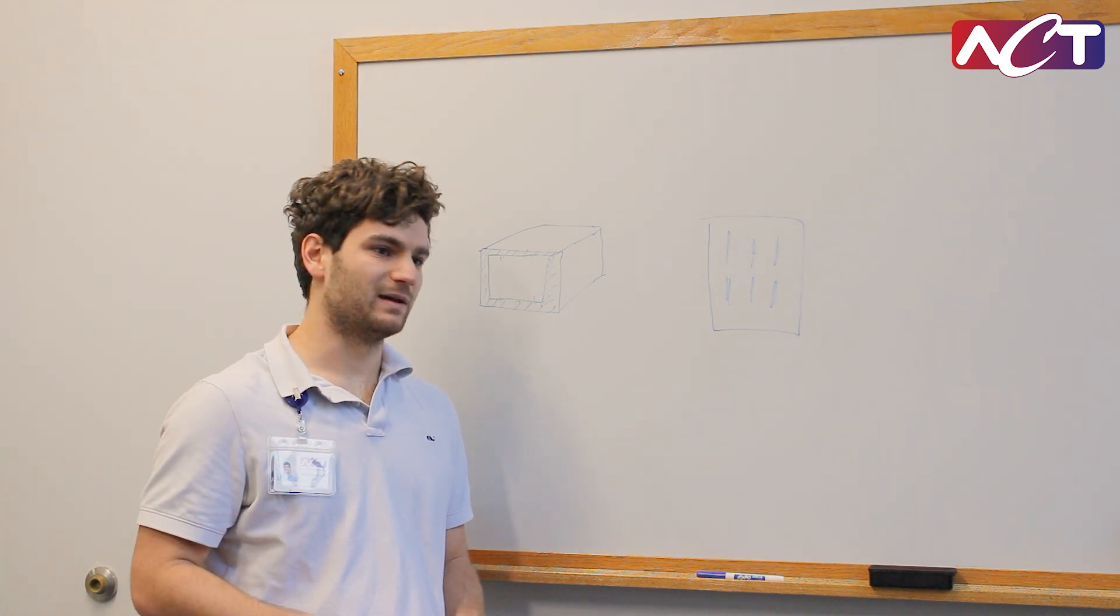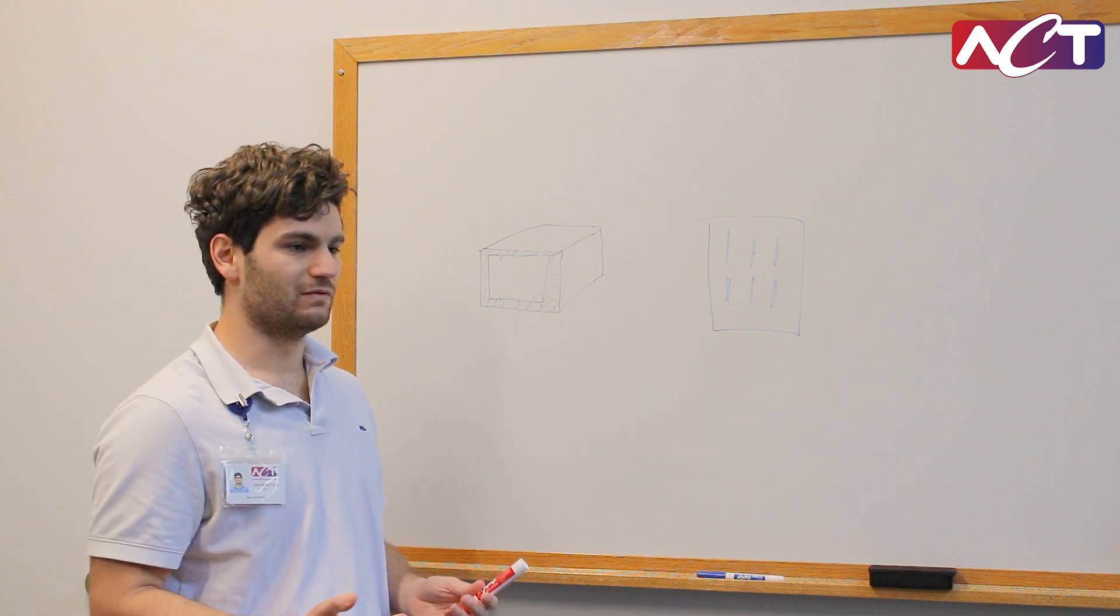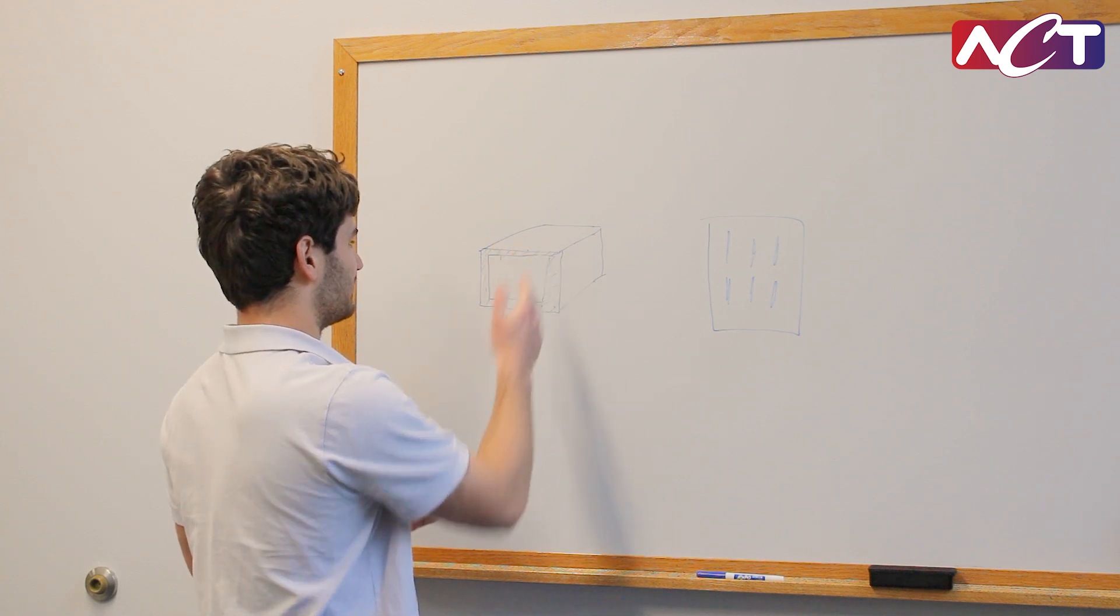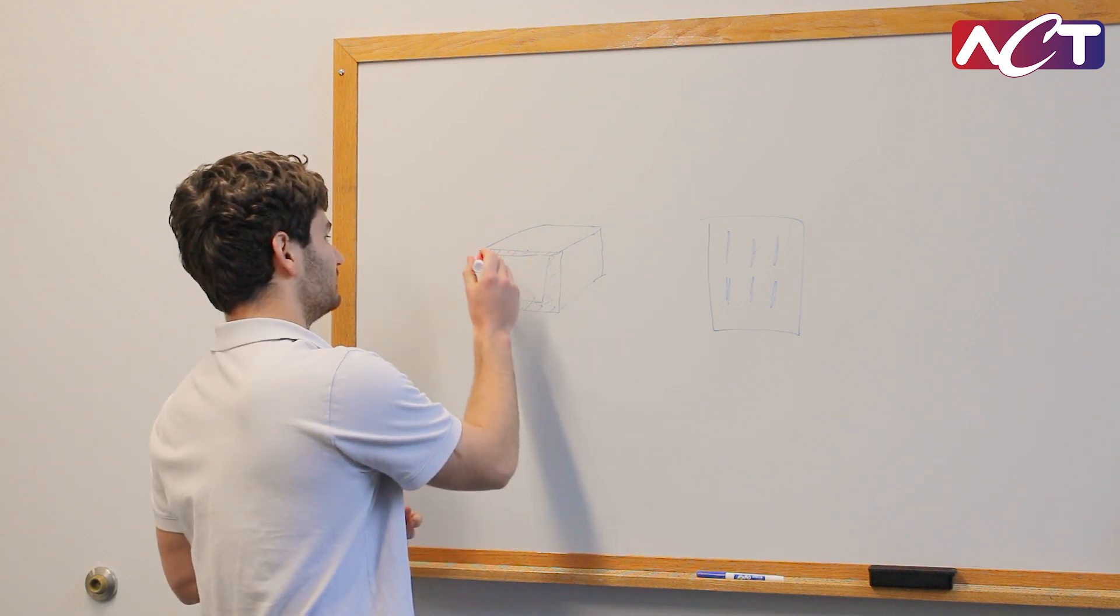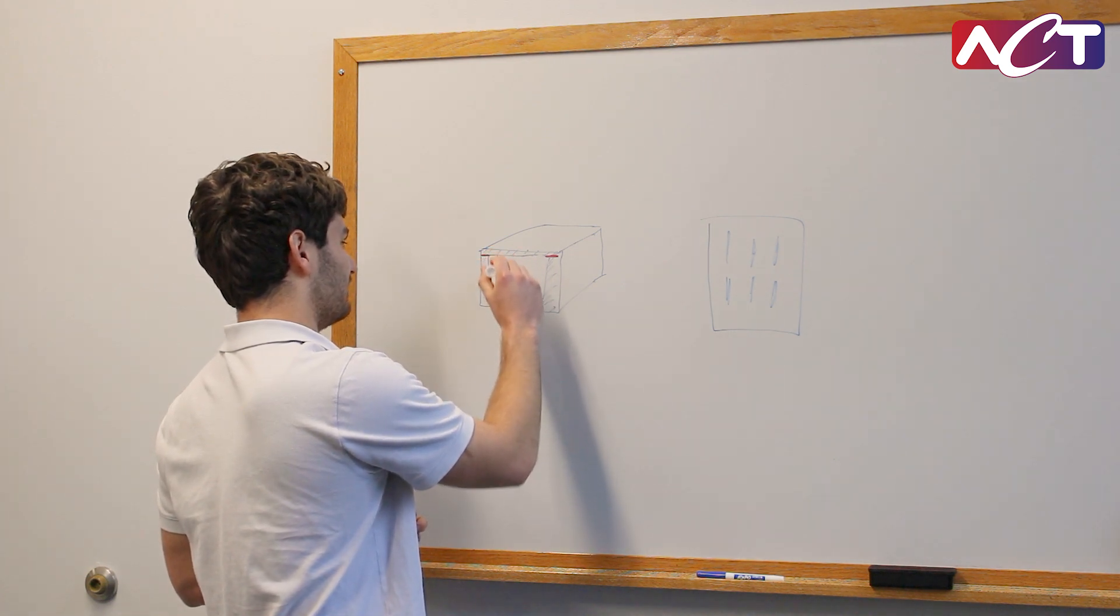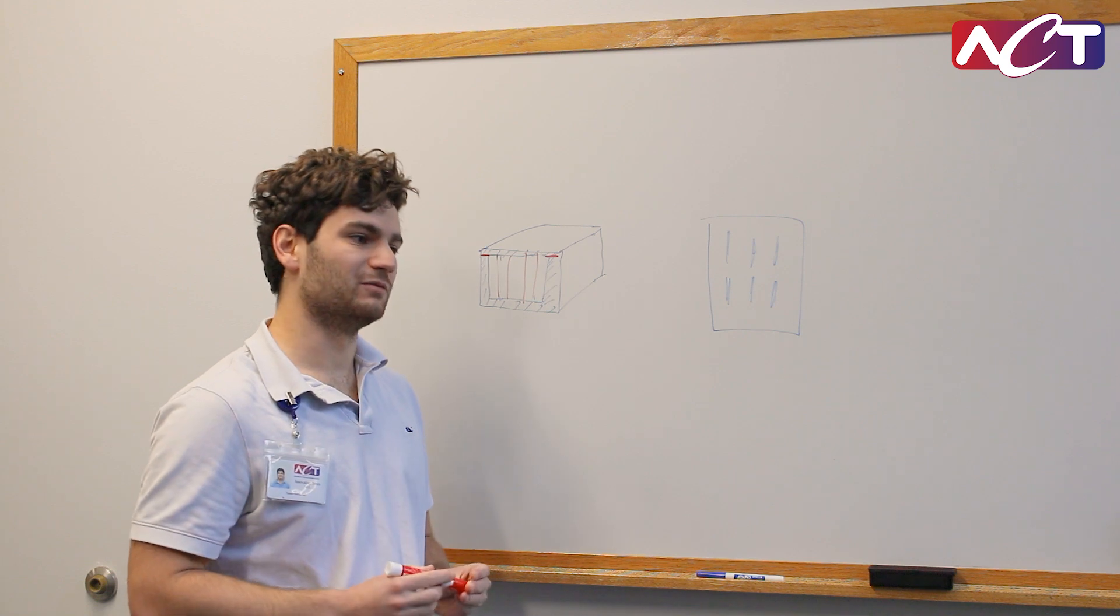So what you can do is vacuum braze two pieces of aluminum together. For example, if we're looking at a cross-section here, maybe you're brazing on this lid so that you can have some sort of fin structure in here.